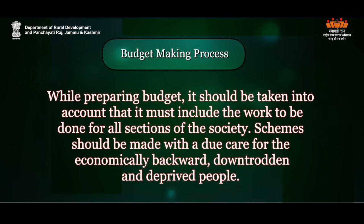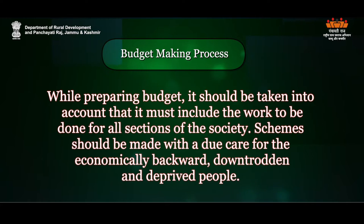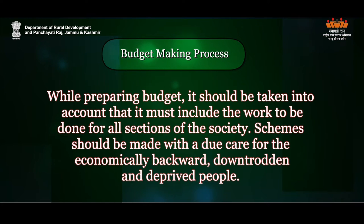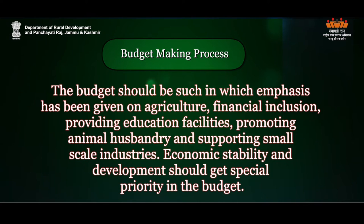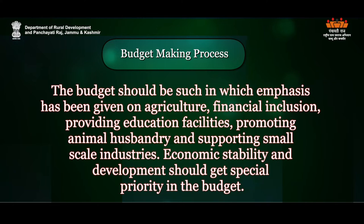While preparing the budget, it should be taken into account that it must include the work to be done for all sections of the society. Schemes should be made with due care for the economically backward, downtrodden and deprived people. The budget should emphasise agriculture, financial inclusion, providing education facilities, promoting animal husbandry and supporting small-scale industries.